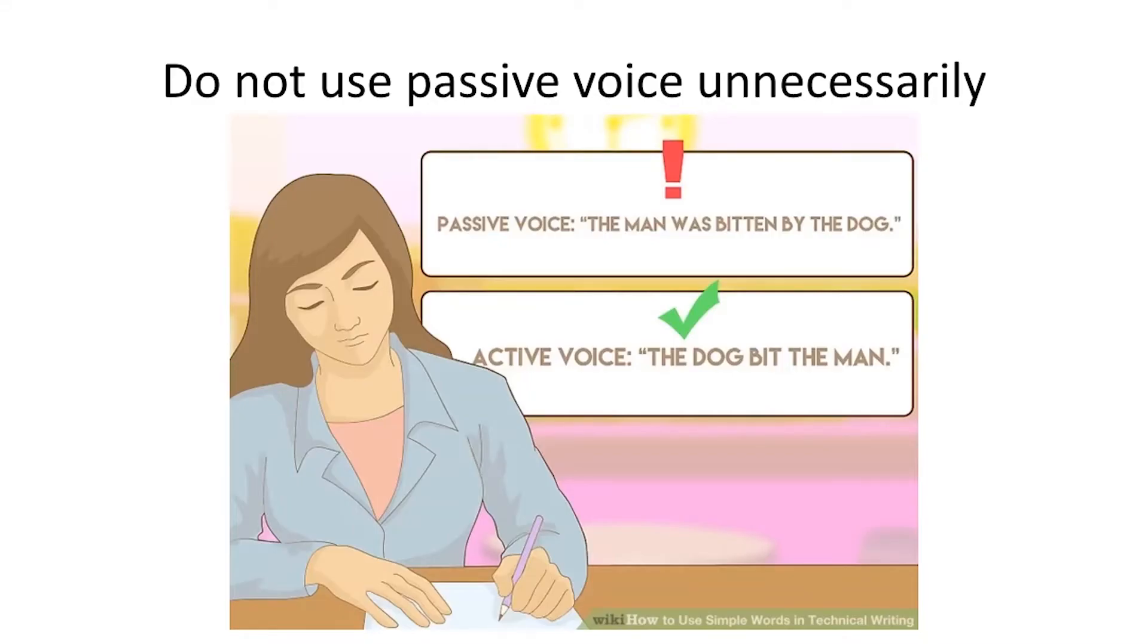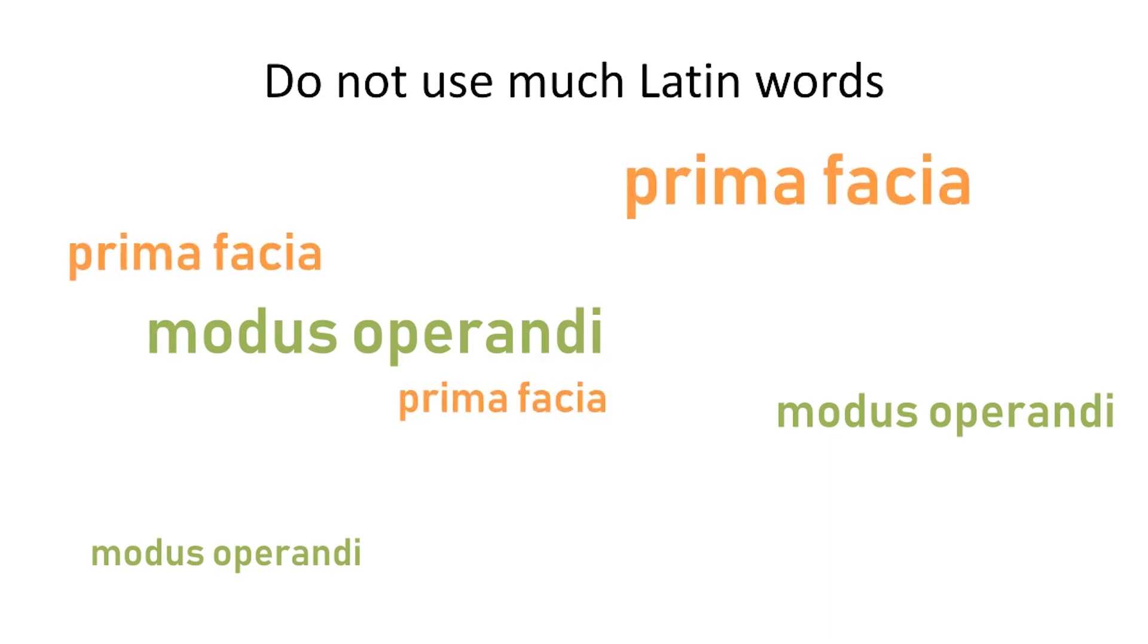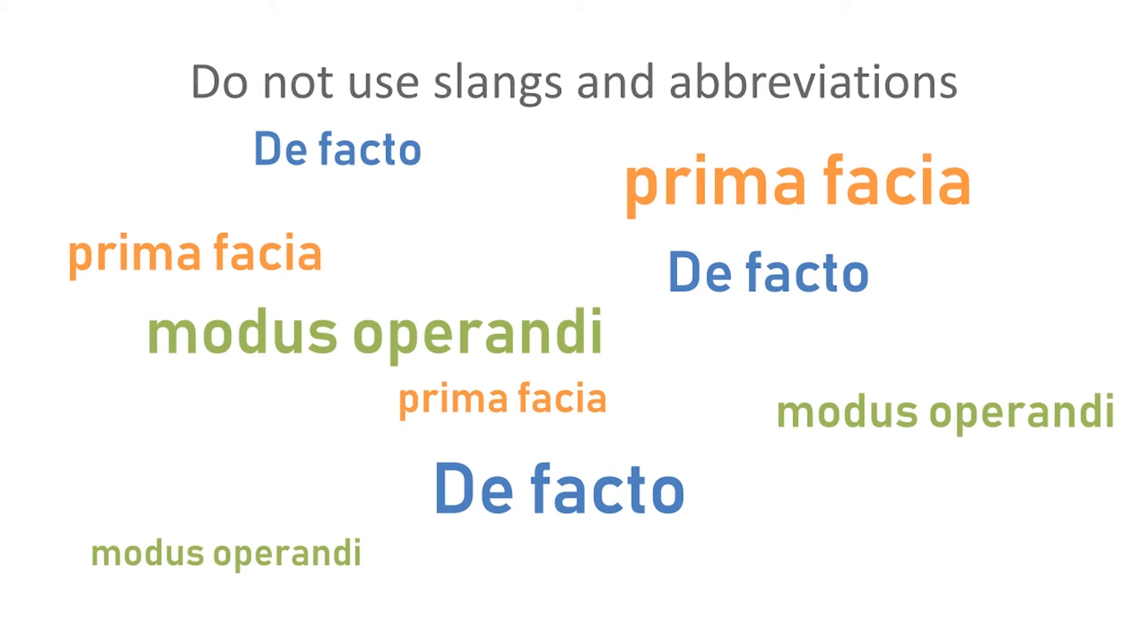Do not use passive voice unnecessarily, unless it is required, unless passive voice is more comfortable and common than that of active voice. Do not use much Latin words like modus operandi, prima facie, etc. Some authors are very fascinated with these words, but please, they are okay in casual speaking or casual communication, but not in academic writing. Don't use them unless they are utmost essential. Avoid using ampersand, at the rate, ASAP, and other slang abbreviations.